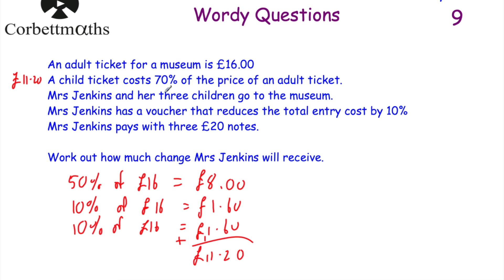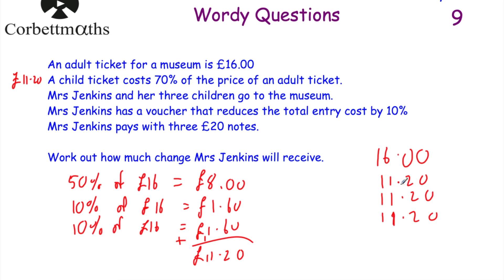Mrs Jenkins and her three children — that's one adult and three children. Adult ticket: £16. Three child tickets at £11.20 each: £11.20 + £11.20 + £11.20. Adding them all up: £16 + £11.20 + £11.20 + £11.20 = £49.60. So without the voucher, the total price would normally be £49.60.